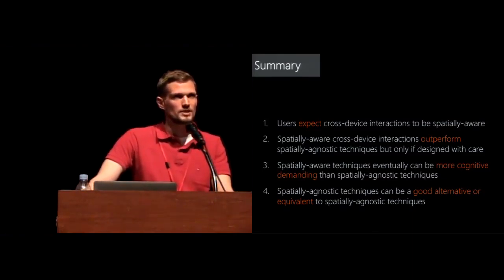In summary: users expect cross-device interactions to be spatially aware, as shown by over 71% of suggested gestures being spatially aware. Spatially aware cross-device interactions outperform spatially agnostic techniques, but only if designed with great care. Spatially aware techniques can eventually be more cognitively demanding than spatially agnostic techniques, as seen with the radar view compared to the non-spatial menu. Spatially agnostic techniques like the menu can be a good alternative or even equivalent to spatially aware techniques. That's my talk — thank you, and I'm happy to take questions.